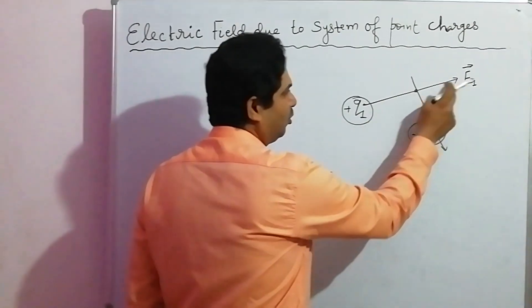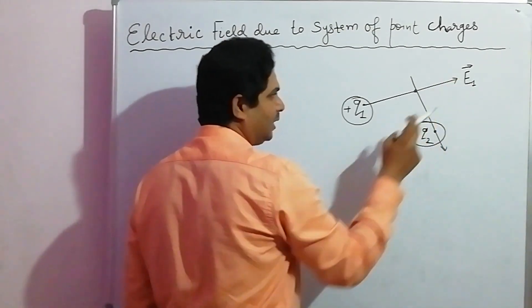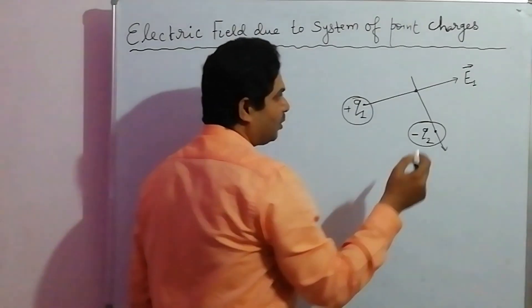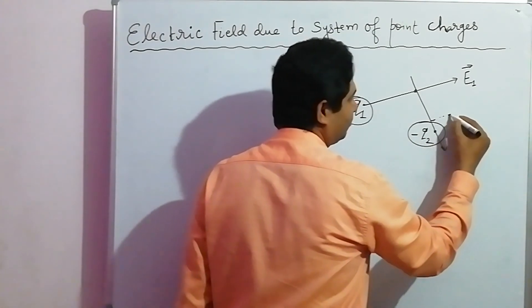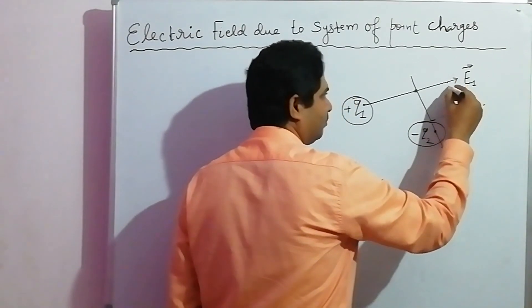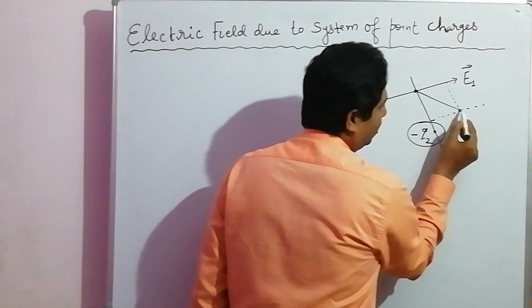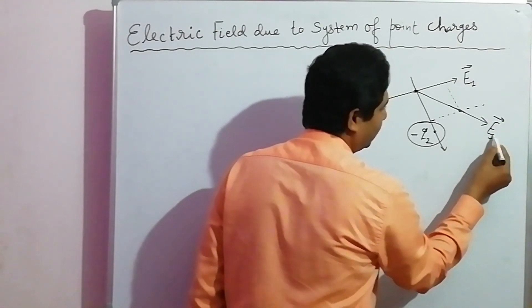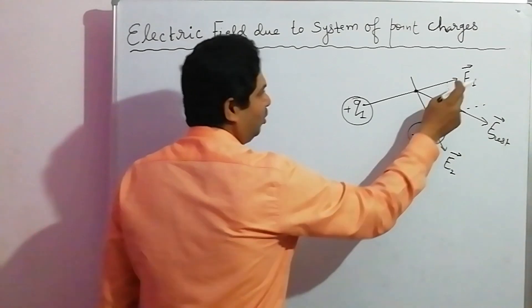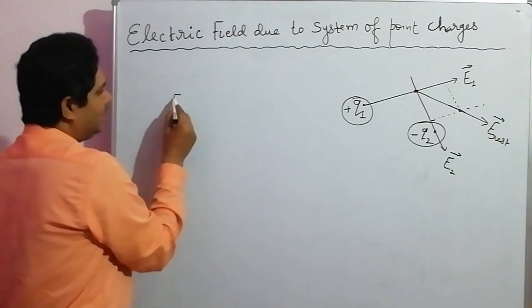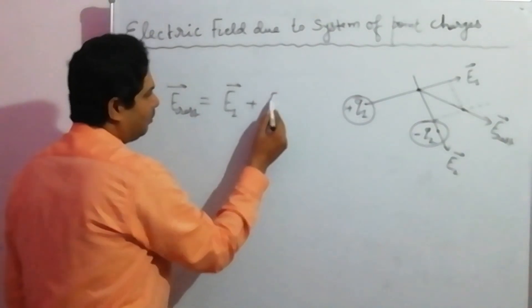Electric field due to Q1 is moving outward, and electric field due to minus Q2 is moving inward. Since these two electric fields are vector quantities, we construct a parallelogram. Joining point to point gives the resultant electric field E resultant. This is electric field E2, and the resultant is E1 plus E2.